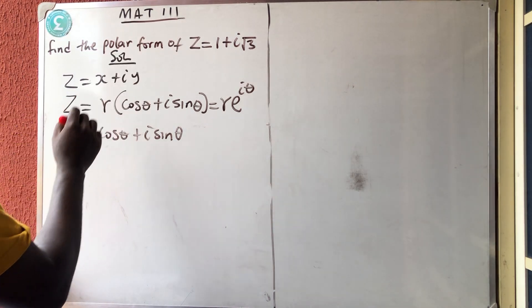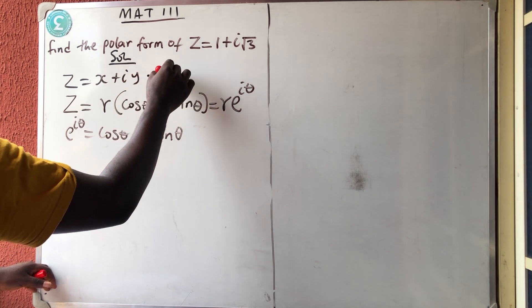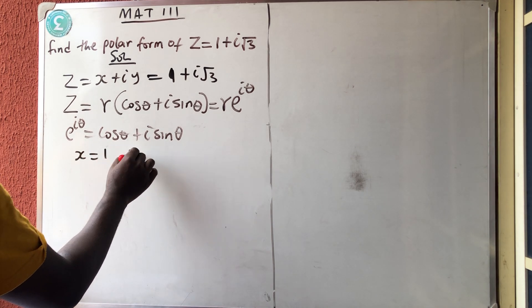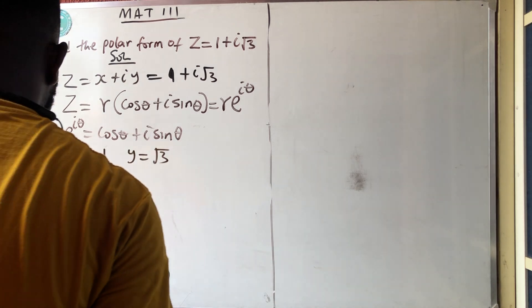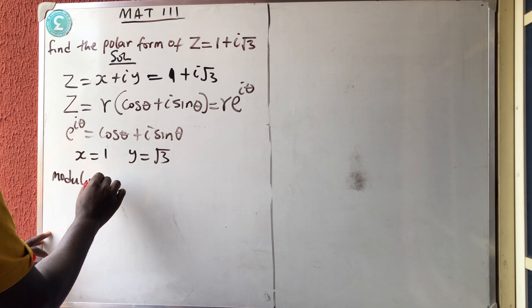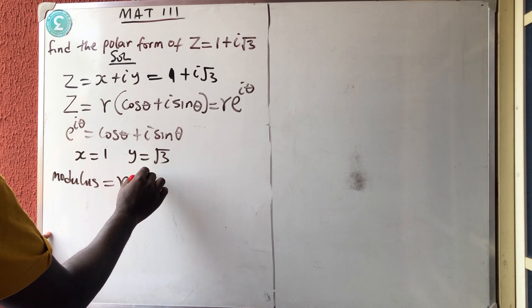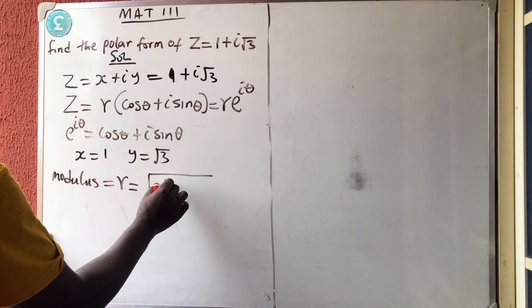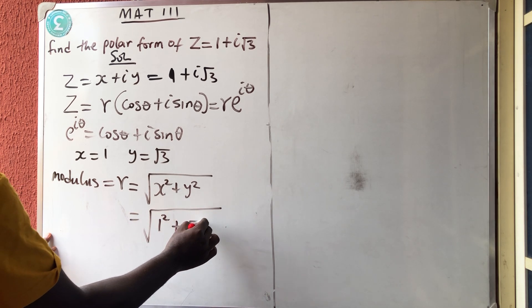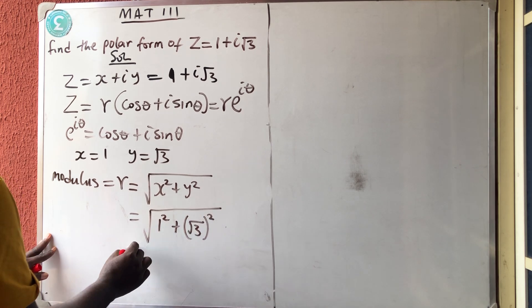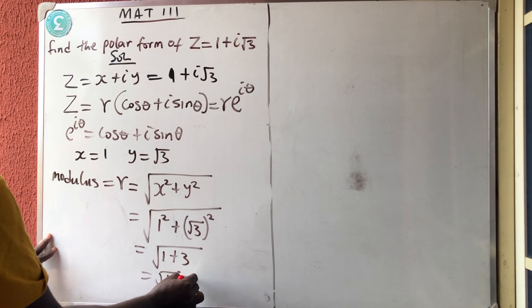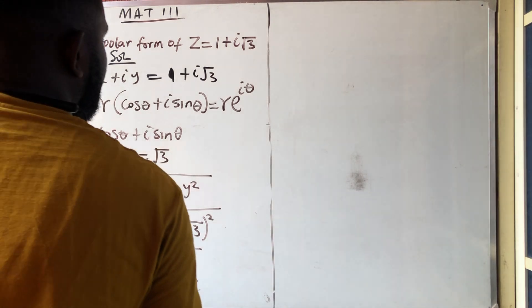Let's continue. We have z equals 1 + i√3, which means x equals 1 and y equals √3. To find the modulus r, we use the square root of x² + y². So r equals √(1² + (√3)²) = √(1 + 3) = √4 = 2. So the modulus is 2.